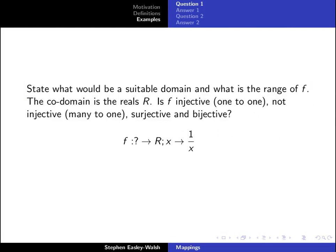Let's look at an example. State what will be the suitable domain and what is the range of f. The codomain is the reals R, is f injective, non-injective, surjective and bijective, and our function is f(x) equals one over x.